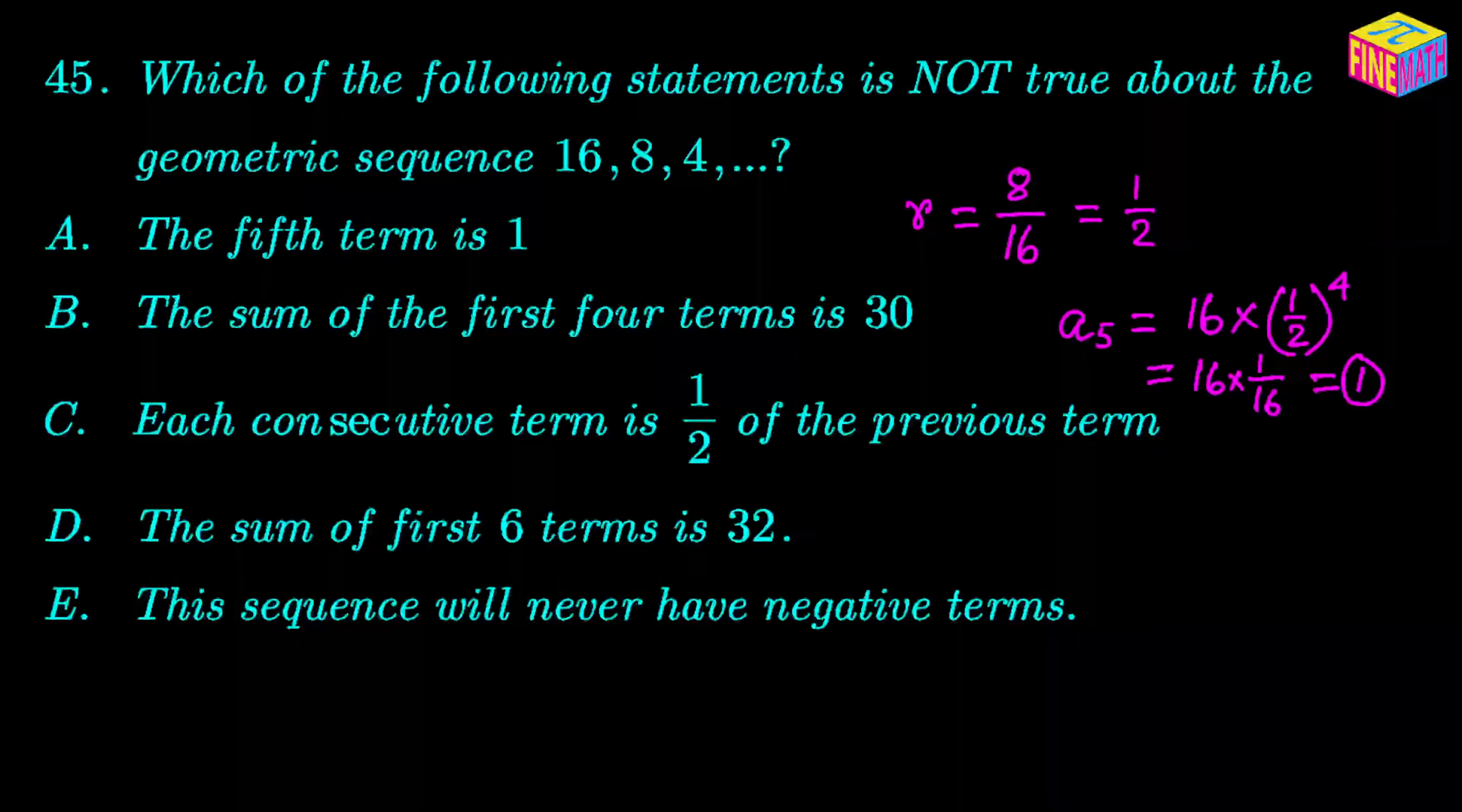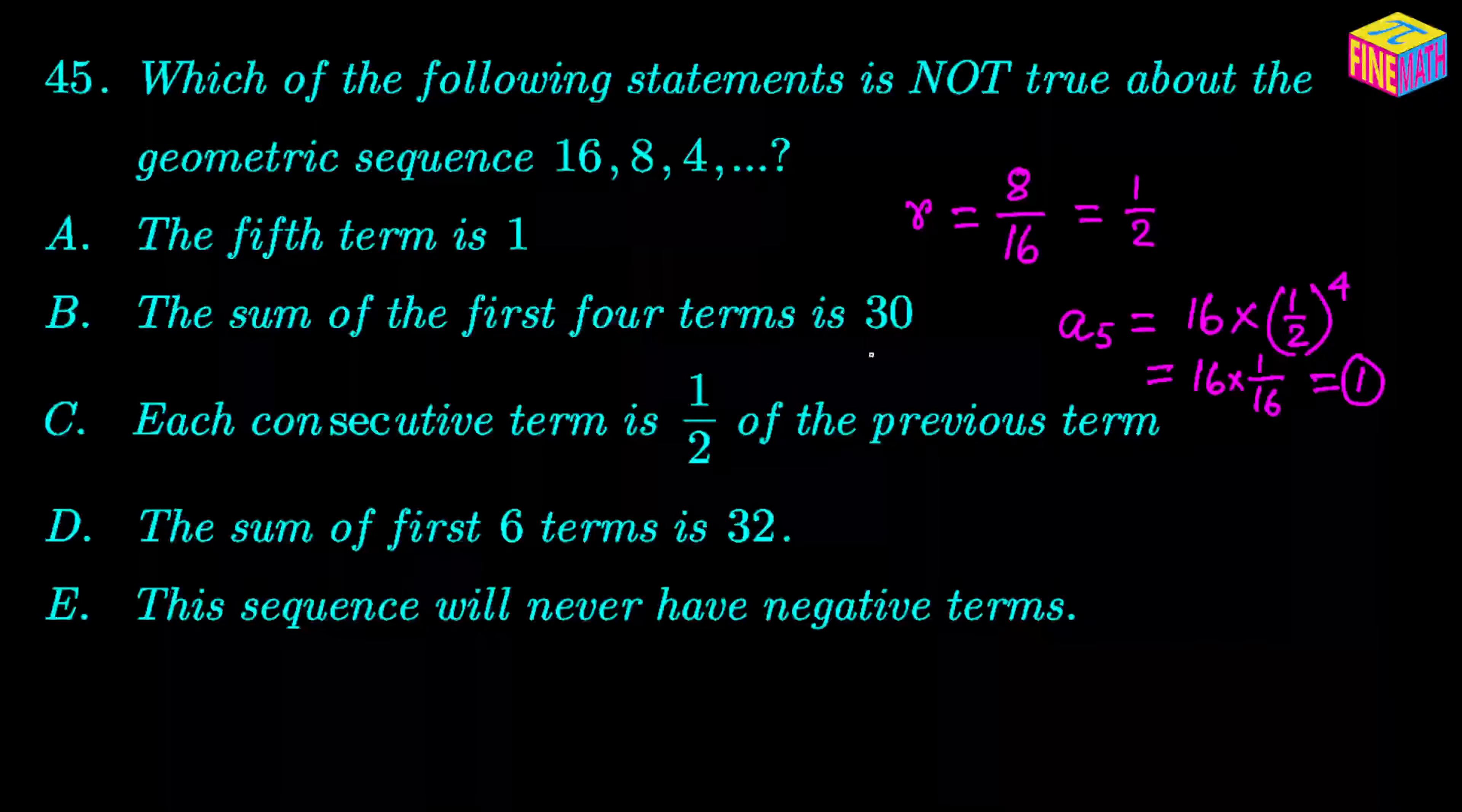And if you look at the second option, it says the sum of the first four terms is 30. Well, what is the fourth term? We can find out the sum using the formula or we can quickly find the fourth term here. The fourth term would be 2 because it would be one half of 4. So the sum would be 16 plus 8, that is 24, plus 4, that is 28, plus 2, that is 30. So again, the second statement is also true. So that is not the correct answer for us.